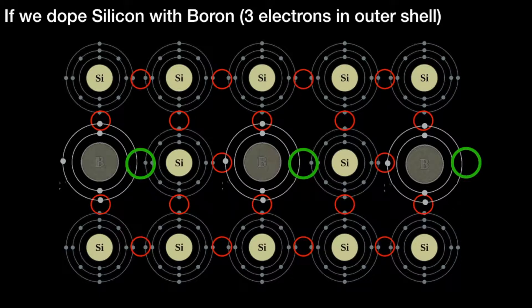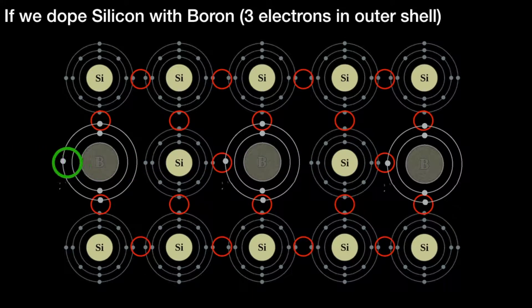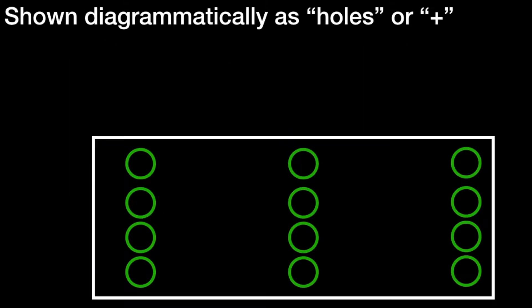The absence of an electron is a positive charge. The absence of a minus is a positive. You'll see this shown diagrammatically as little circles or holes, or sometimes, as in the RSGB book, you'll see it as a plus sign. Because these holes are the absence of an electron, the absence of a minus being a plus, this is p-type or positive type semiconductor material.